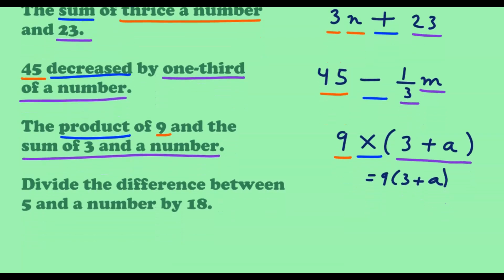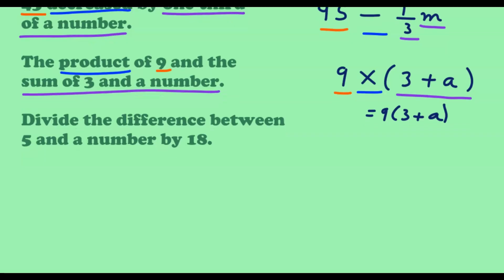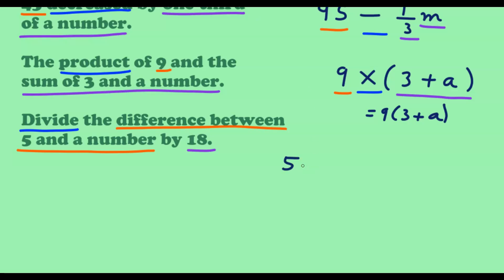Next, 'divide the difference between five and a number by 18.' The difference between five and a number is 5 minus the number. Using b, that is 5 minus b. We divide this by 18, giving us (5 minus b) over 18.